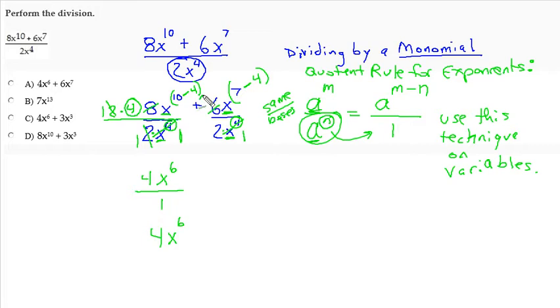This 6 also factors as 2 times 3. These 2s are identical factors, so we divide them out and replace them with 1s. What we have in this second fraction at this point is a 3 left behind, and x raised to 7 minus 4 is 3. In the denominator, we have 1 times 1 is 1.